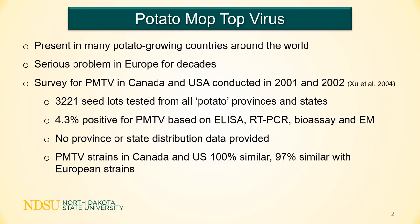Unfortunately, in this study, no province or state distribution data was presented, so at that time we did not know where the pathogen was. Another interesting finding was that they looked at the virus strains in the US and Canada, found that they were 100% similar to each other, and then compared the North American strains to European strains and found that they were 97% similar. This is important because when we look at genetic resistance and other control measures, we know that we're dealing with essentially the same pathogen population.